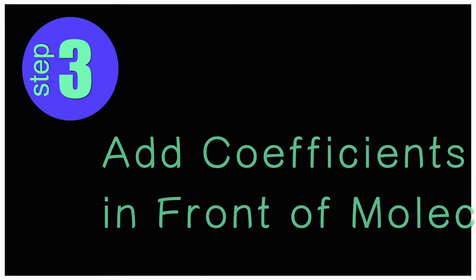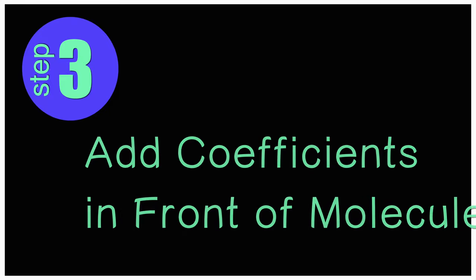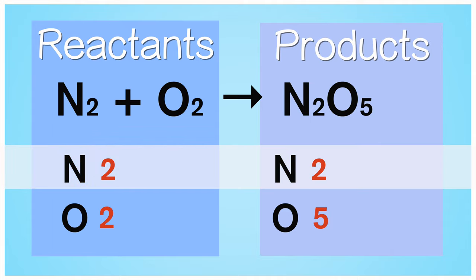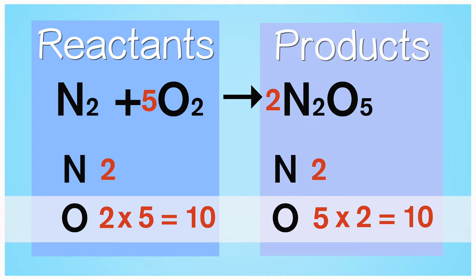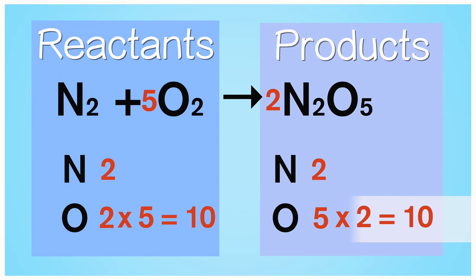Step 3: Now let's add the coefficients in front of the molecules. The number of nitrogen atoms are equal on both sides. Next, in order to get the same number of oxygen atoms, let's add a coefficient of 5 in front of O2 on the reactant side and add a coefficient of 2 in front of N2O5 on the product side. Now this changes the number of nitrogen atoms from 2 to 4 on the product side. To compensate for this increase, let's add a coefficient of 2 in front of N2 on the reactant side.